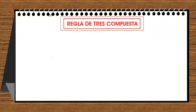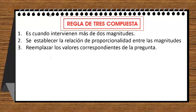Regla de tres compuesta es cuando intervienen más de dos magnitudes. Puntos importantes para resolver problemas que involucran la relación entre dos o más magnitudes: se establece la relación de proporcionalidad entre las magnitudes, vas a identificar si es magnitud inversamente proporcional o directamente proporcional, y luego vas a reemplazar los valores correspondientes de la pregunta.